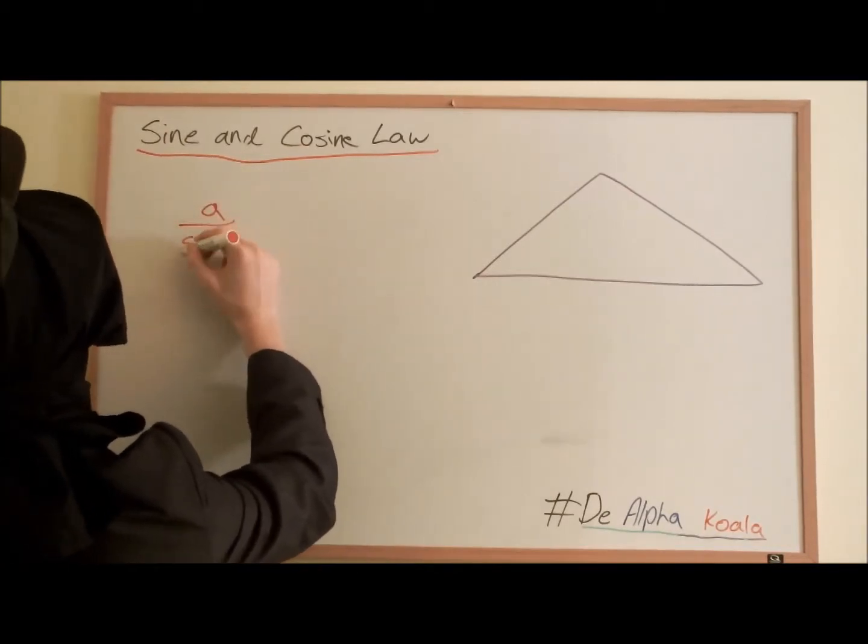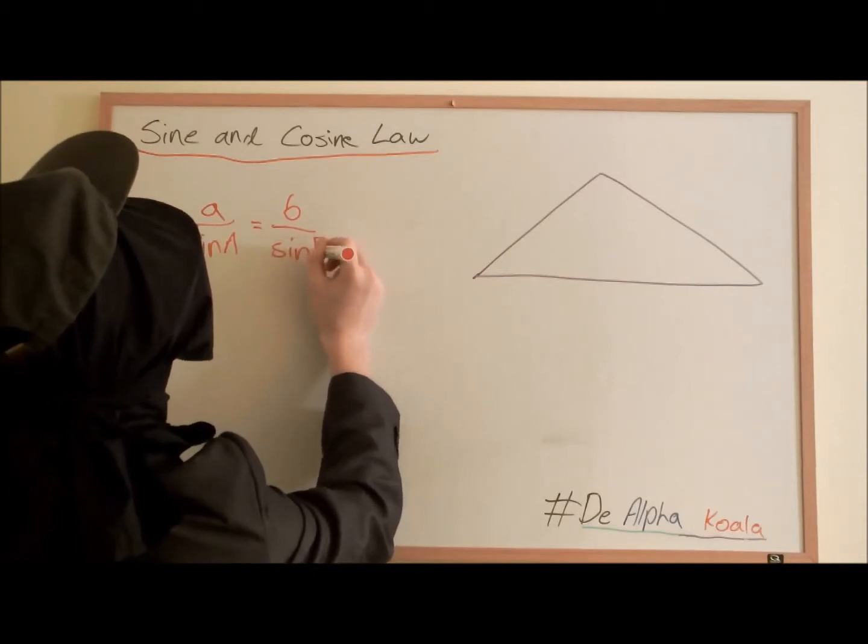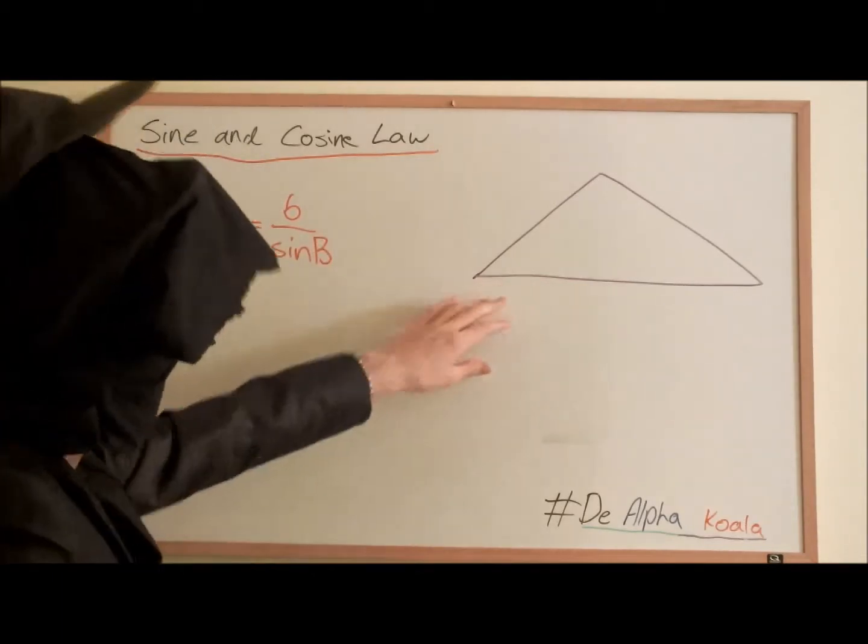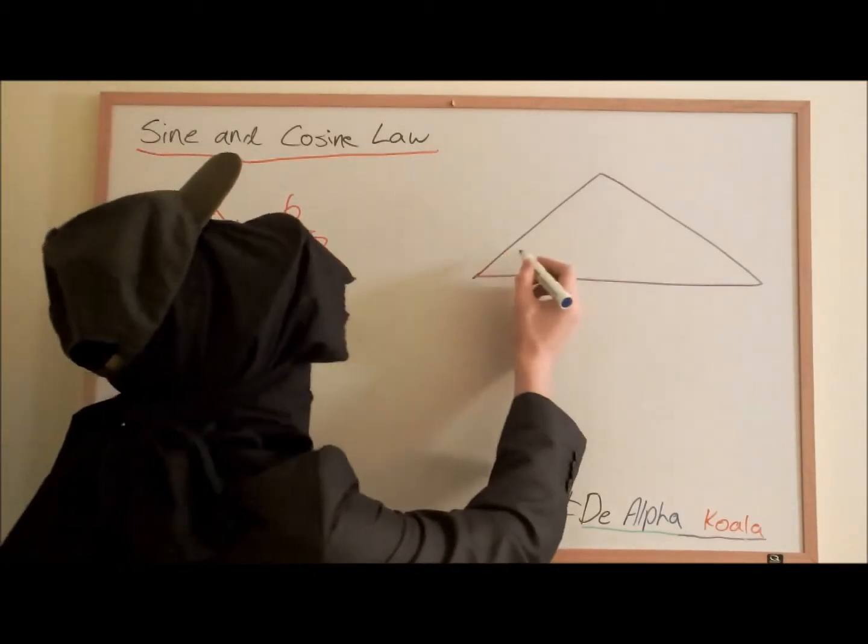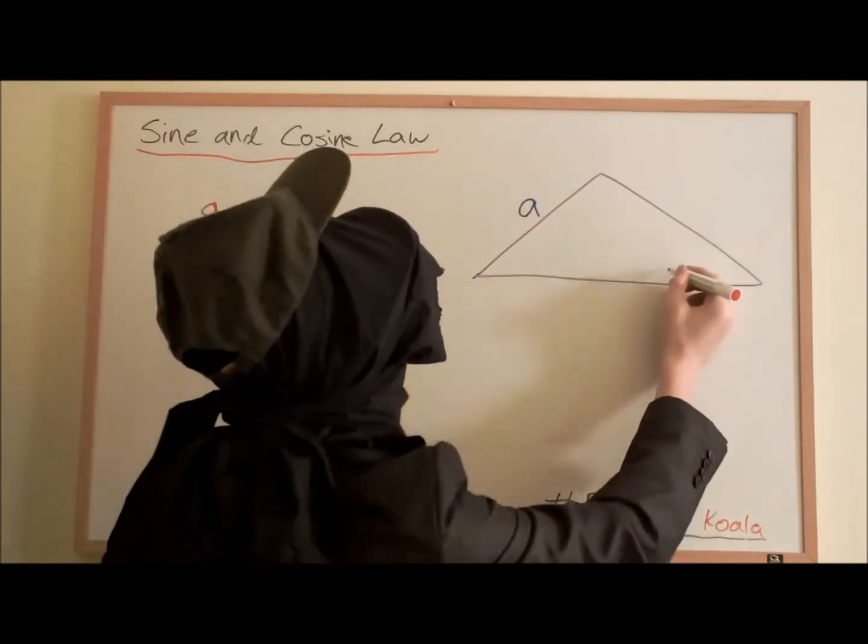The sine law says that A over sine A equals B over sine B. Alright, so if we look at that triangle, we name the outer sides with a lowercase letter, and the interior angles with the capital letter.